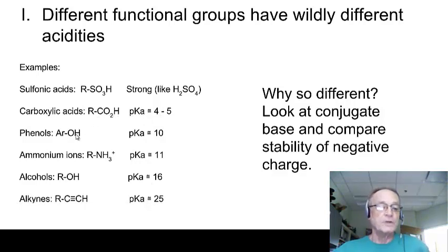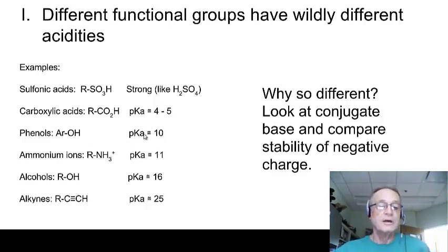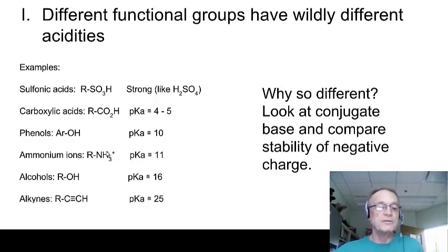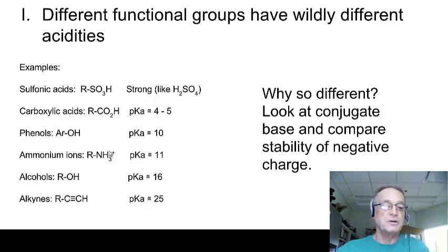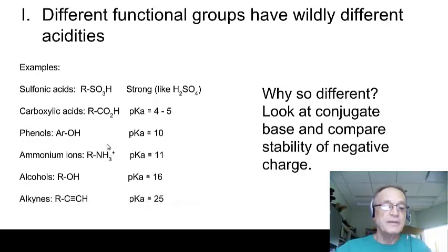Then after the carboxylic acids, there are phenols. Remember, Ar means a benzene ring, so a benzene ring with an OH group on it. pKa of about 10 — very weak, much weaker than carboxylic acids, but still strong enough that these will react with hydroxide, so they are considered to be acids. Ammonium ions are a little bit different — they are a polyatomic ion with a positive charge, whereas the rest are neutral. They are roughly the same strength as phenols, with a pKa of about 10 to 11.